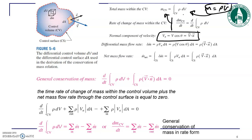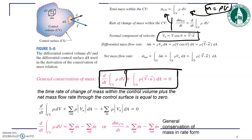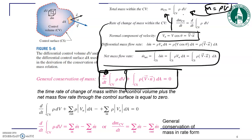In the integral format of conservation of mass, the first term is the rate of change of mass within the system, which equals the net mass flow rate — mass in minus mass out. The net mass flow rate is represented by the corresponding integral expression. That is how you derive the final conservation of mass equation.